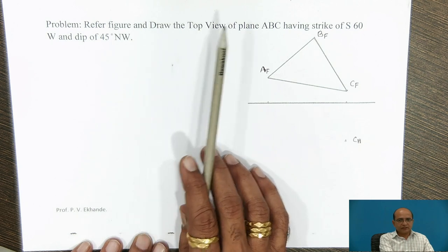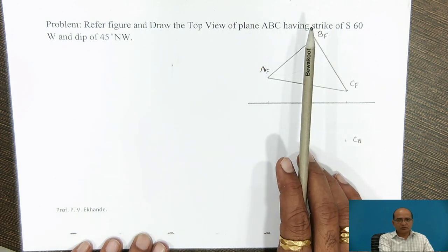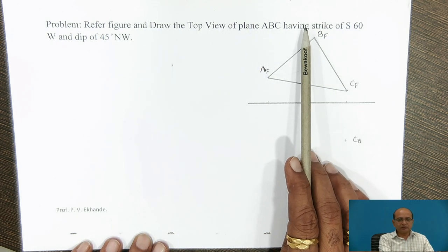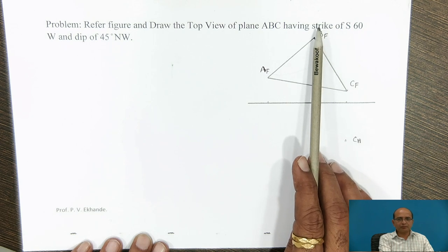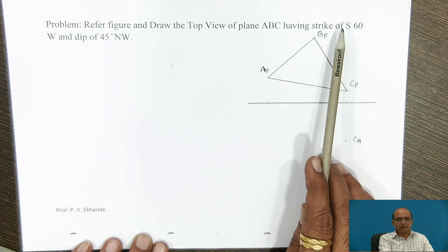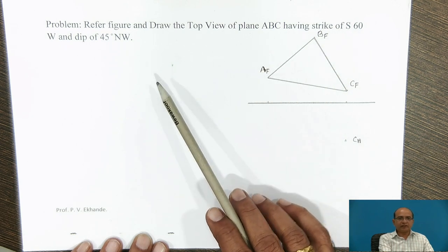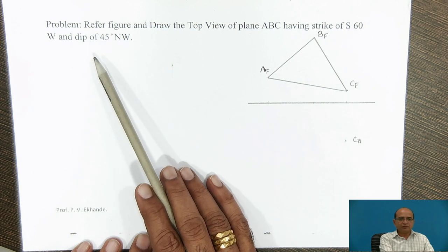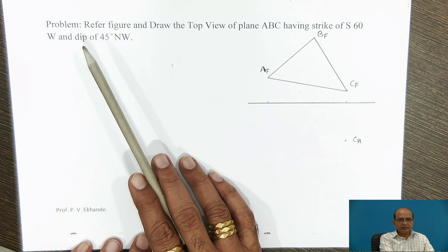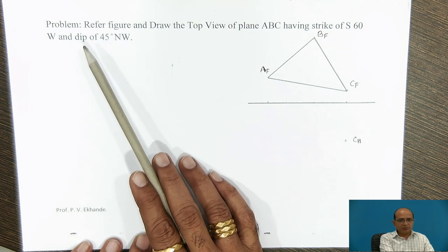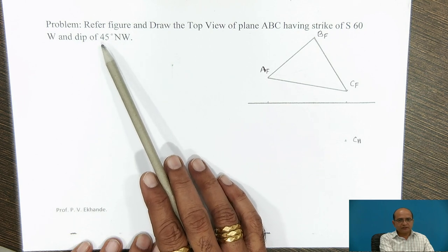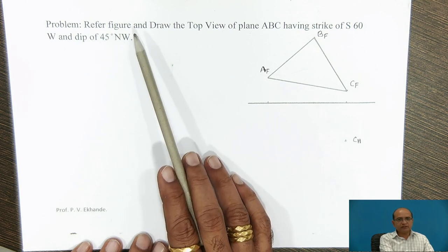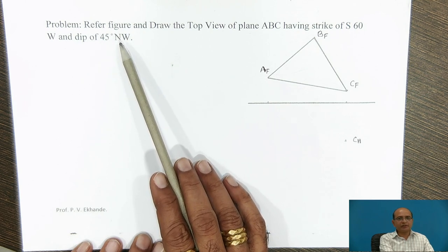Strike is the bearing of the horizontal line from the plane. Dip angle is the angle made by the plane with respect to the ground. Dip direction is the direction in which the plane has downward inclination.